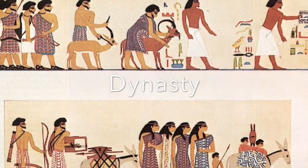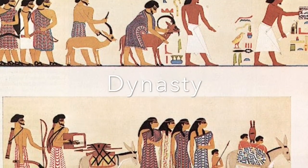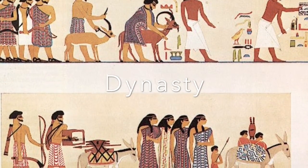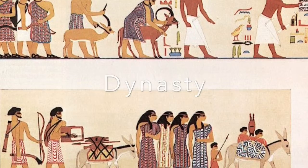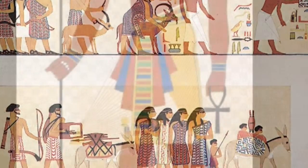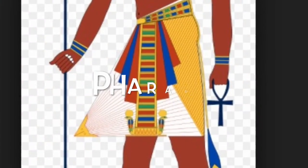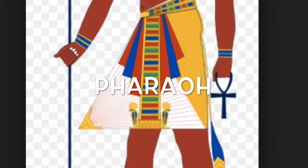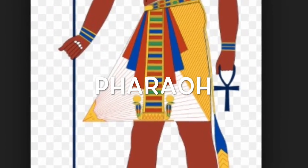A series of rulers from the same family or ethnic group. The title of the kings of ancient Egypt.